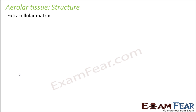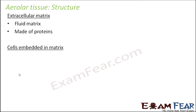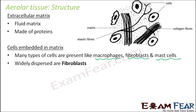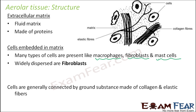The structure of areolar tissue is loosely connected. The extracellular matrix is a fluid matrix made up of proteins. Many types of cells are embedded in the matrix — some of them are macrophages, fibroblasts, and mast cells. Fibroblasts are widely dispersed, as wide dispersion is expected in loosely connected tissue. Cells are generally connected by ground substance made of collagen and elastic fibers, and because of their presence this tissue provides a lot of flexibility.